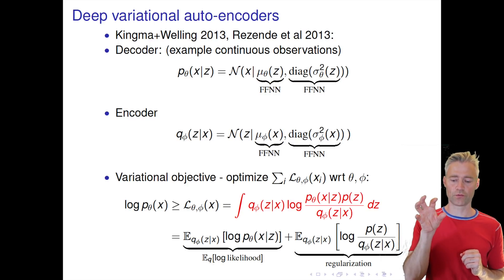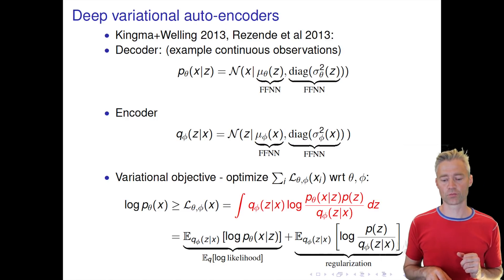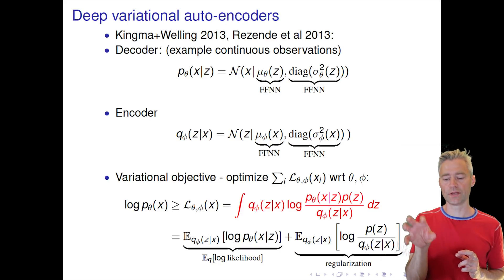This is like a KL divergence between q and the prior, and we know that is minimum when the posterior q is equal to the prior.